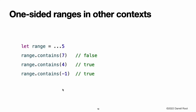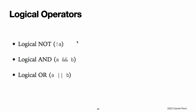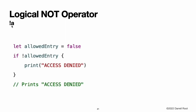You can also check whether a one-sided range contains a particular value. Logical operators modify or combine the Boolean logic values true and false. Swift supports the three standard logical operators found in C-based languages: logical NOT, logical AND, and logical OR. The logical NOT operator inverts a Boolean value so that true becomes false and false becomes true. The logical NOT operator is a prefix operator and appears immediately before the value it operates on without any white space. It can be read as 'not a'. The phrase if not allowedEntry can be read as 'if not allowed entry'. The subsequent line is only executed if allowedEntry is false.